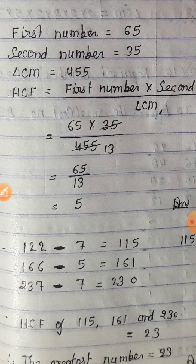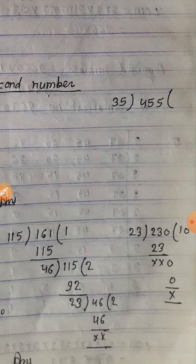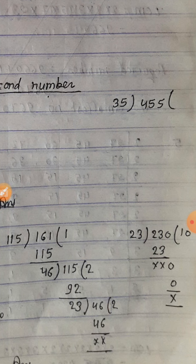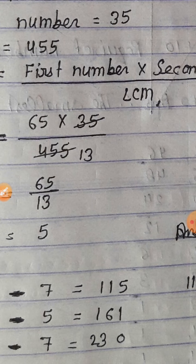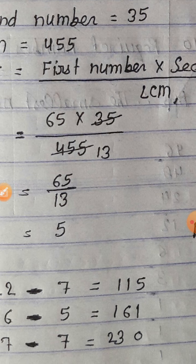Value put करते हैं: (65 × 35) ÷ 455. पहले 35 को 455 से divide करते हैं — आता है 13। फिर 65 ÷ 13 = 5। तो HCF = 5 — यही answer है question number 2 का।